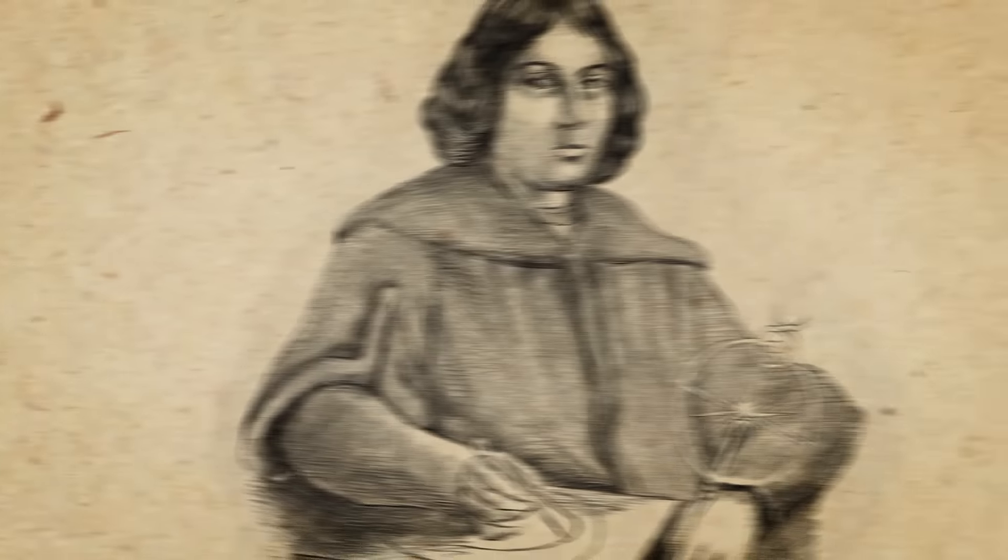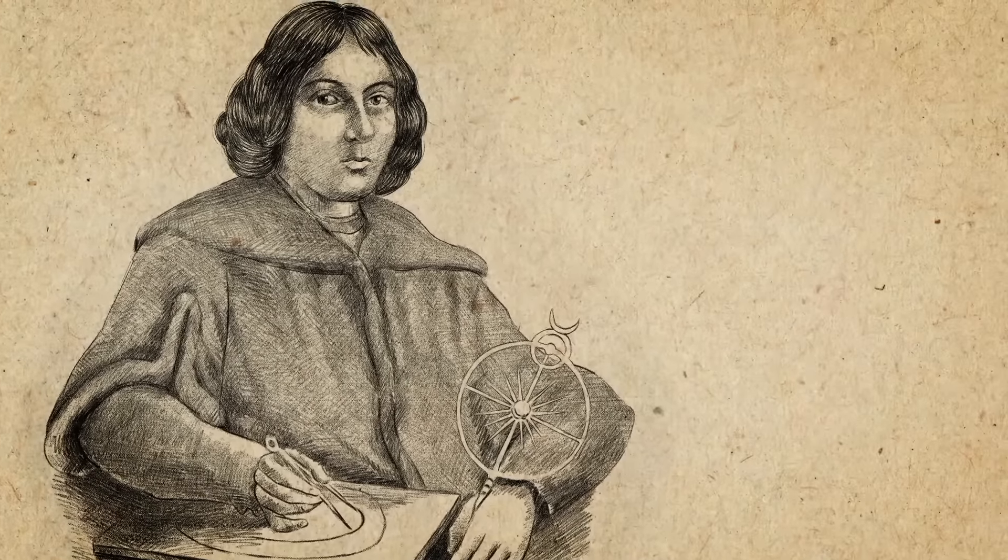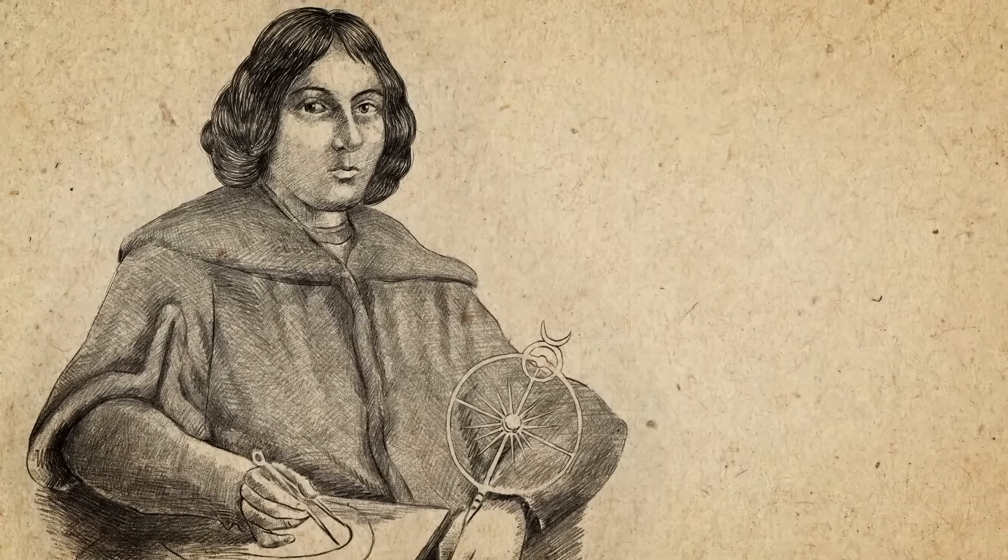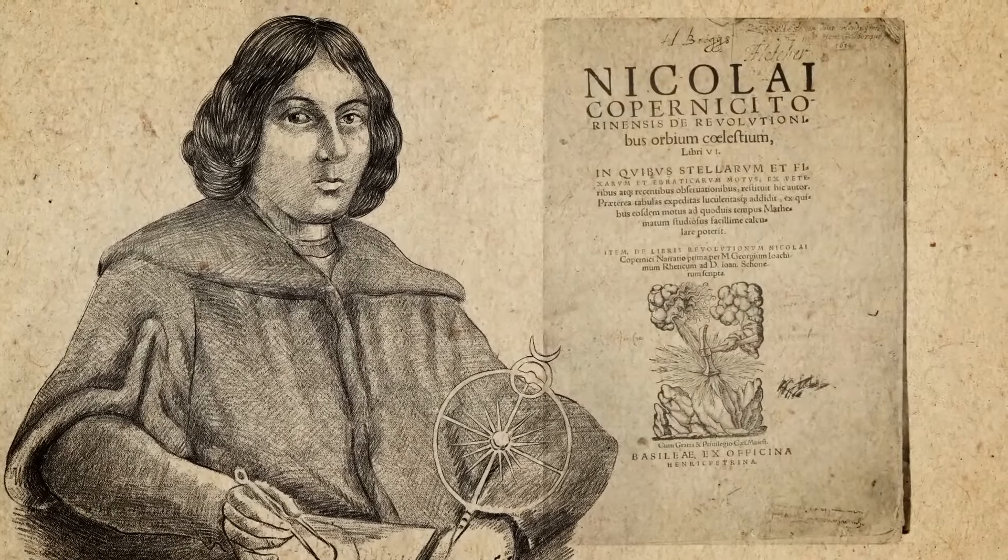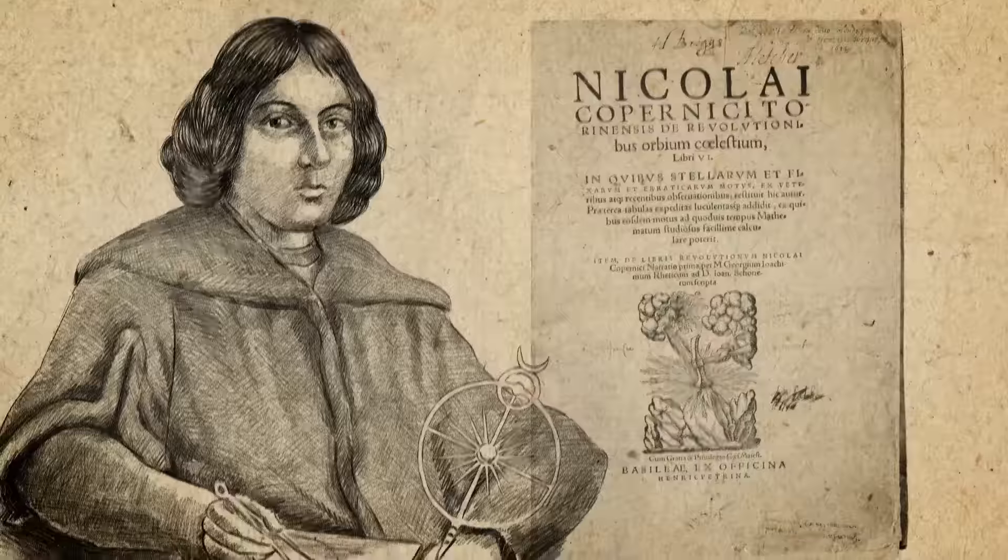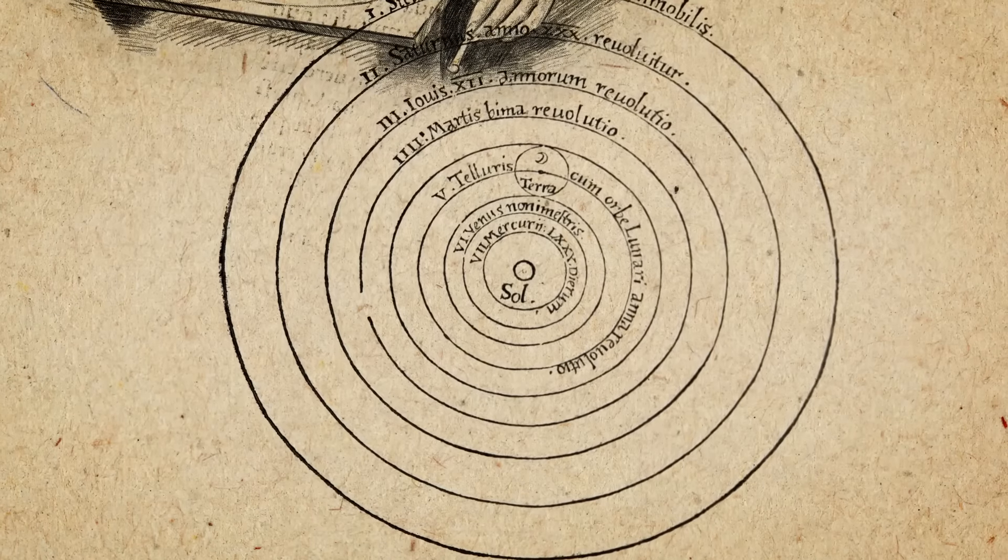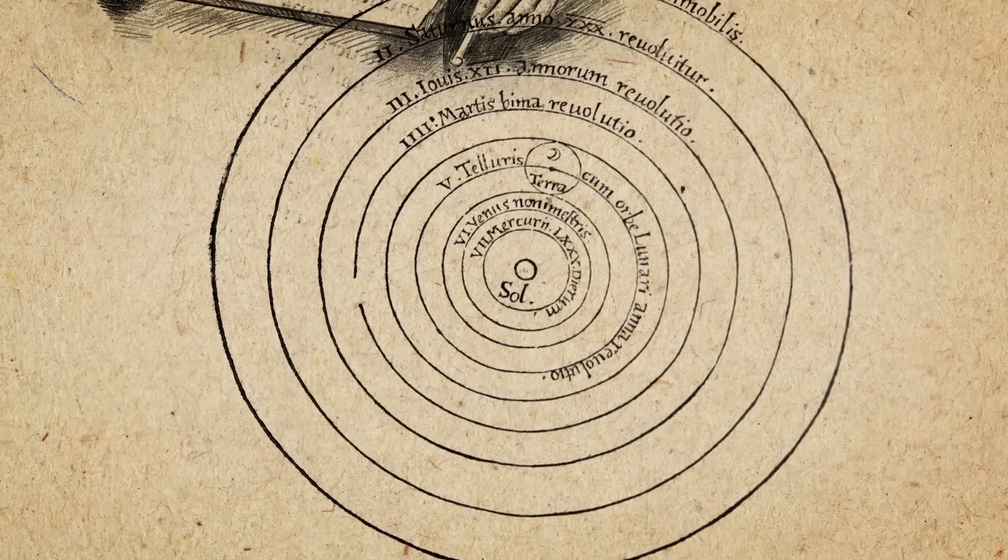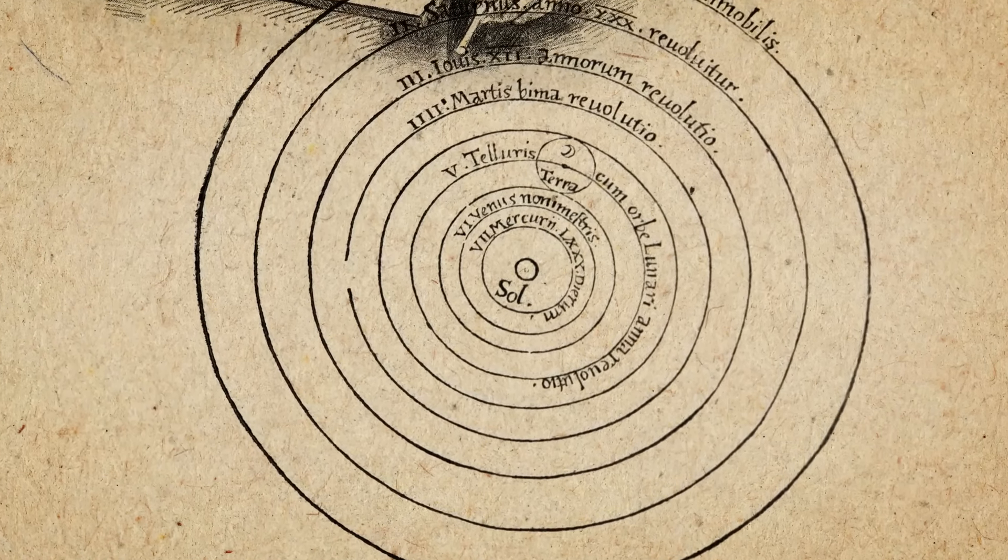And so, on his deathbed in 1543, the Polish astronomer Nicolaus Copernicus published on the revolutions of the heavenly spheres, a radical reformulation of the old system that put the Sun at the center of the universe, still and motionless, with the Earth set in motion around it along with all the other planets.